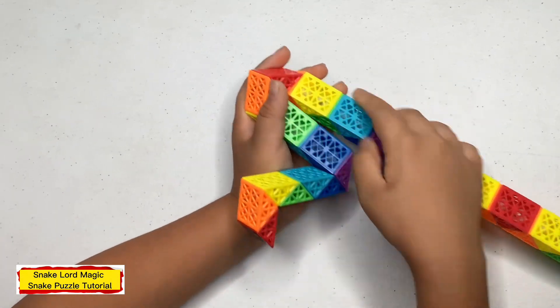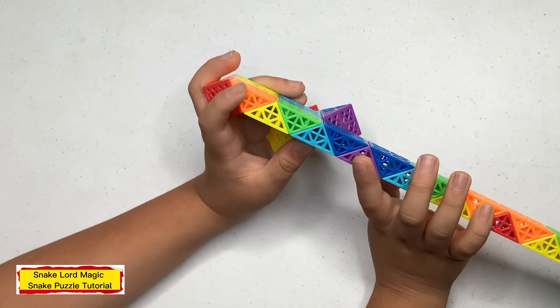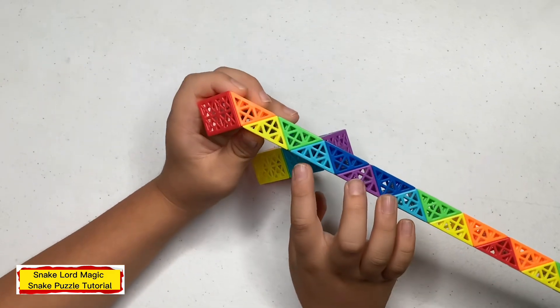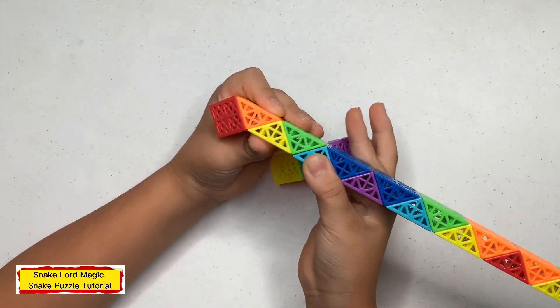Now count 3: 1, 2, 3 and finish. Then fold one to one to one.